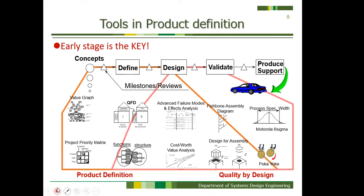This view graph shows the tools provided for the product definition stage. From the very beginning of product development, design tools such as the value graph, project priority matrix, quality function deployment, and function tree structure have been provided. In the later part of product definition — the so-called quality by design stage — other design tools have been created as well. Today I will introduce some of those tools useful for the early stage of product development.